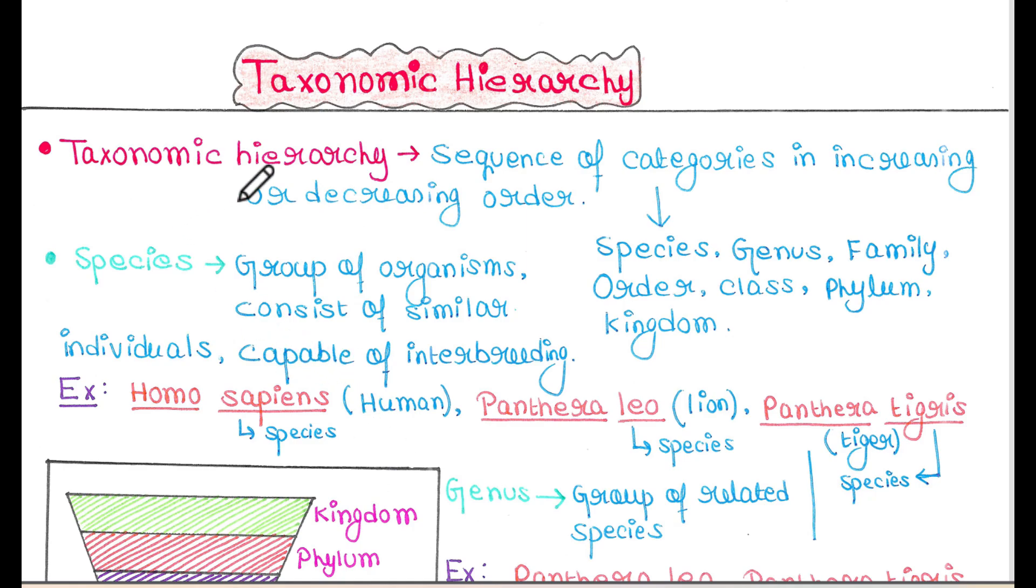So what is taxonomic hierarchy? It is basically a sequence of categories in increasing or decreasing order. Categories include species, genus, family, order, class, phylum, kingdom.